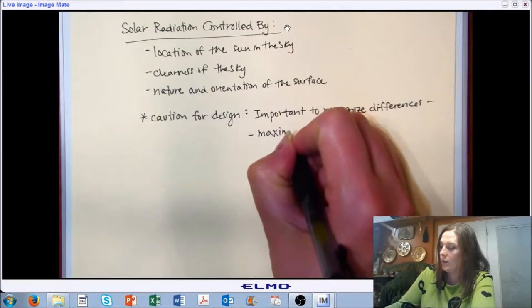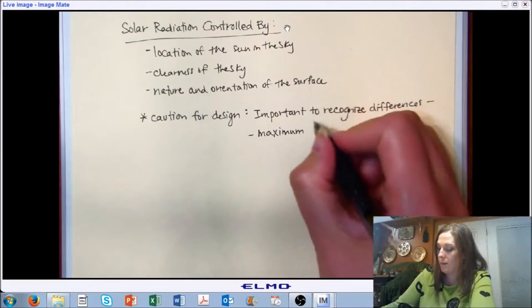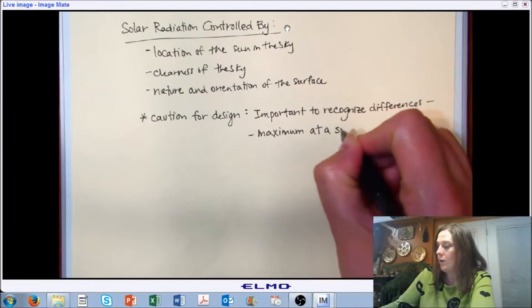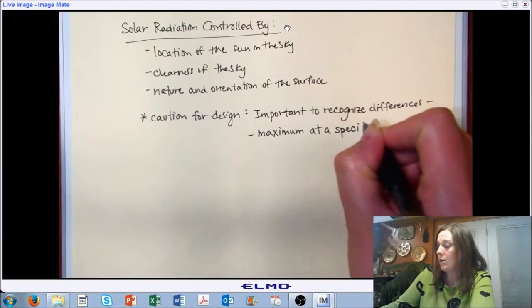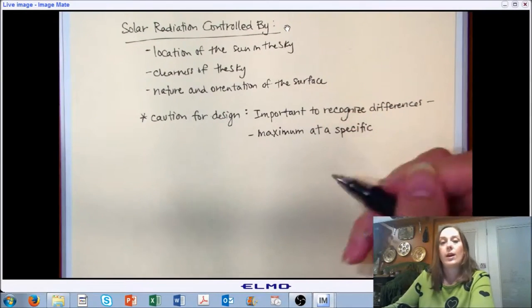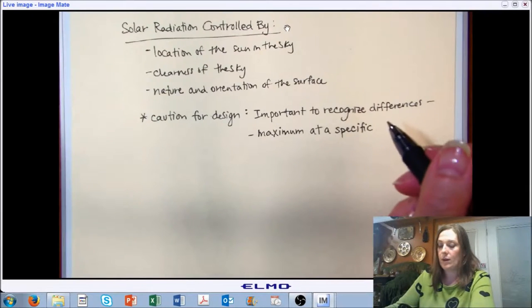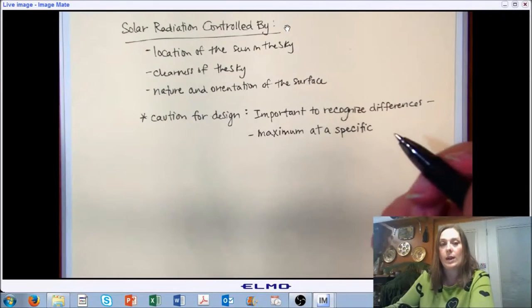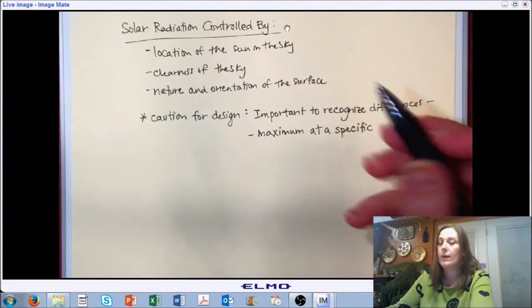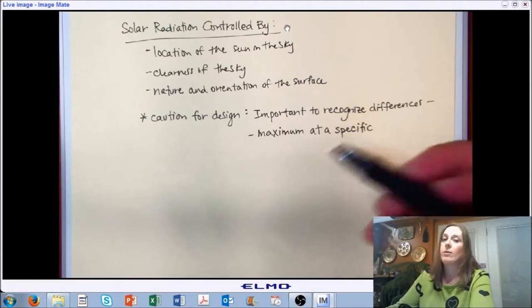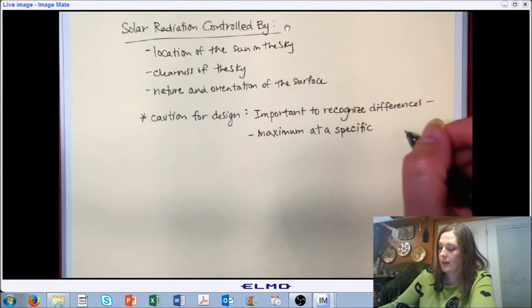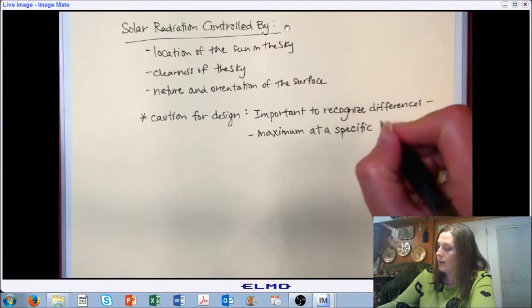We could look at a maximum solar radiation at a specific time. Over the course of the day and the year, the sun interaction with a specific location on the surface of the earth is going to be different. The amount of solar radiation is going to vary throughout the day and throughout the year. So we might be interested in finding the maximum at a specific time.